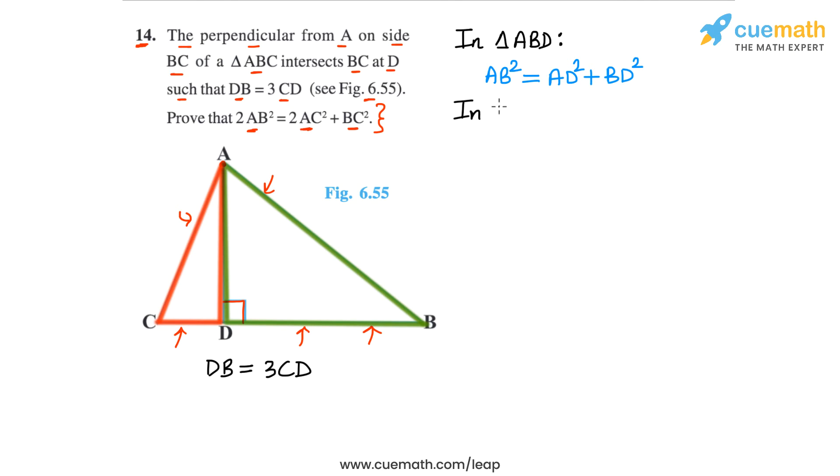Then from triangle ACD, if we apply the Pythagorean theorem, what will we get? In this triangle ACD, AC is the hypotenuse, so AC square will be equal to AD square plus CD square.